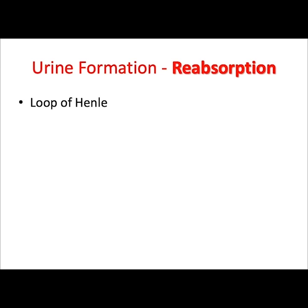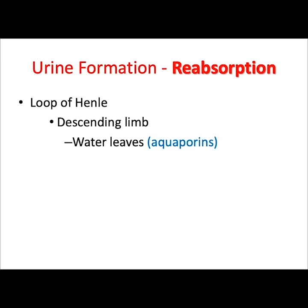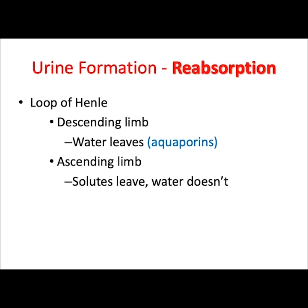The loop of Henle has two limbs: a descending limb and an ascending limb. The descending limb is permeable to water because of the presence of pores called aquaporins, which are proteins that allow water through. The descending limb is impermeable to solutes, so water is allowed to leave but solutes cannot follow. In the ascending limb, solutes can leave so it is permeable to solutes, but water cannot leave — there are no aquaporins present.